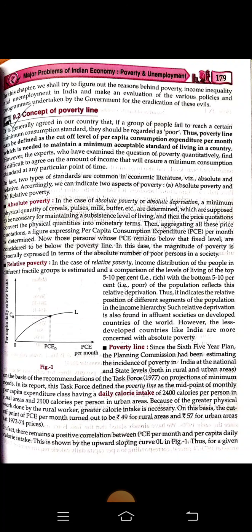There is a positive correlation between PCE per month and per capita daily calorie intake, shown by the upward-sloping curve OL in Figure 1. For a given minimum value of per capita daily calorie intake (C₀), the corresponding per month PCE is read from the figure. This is how the poverty line is determined.